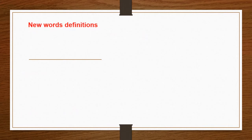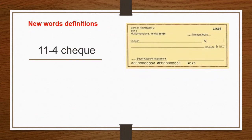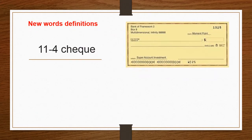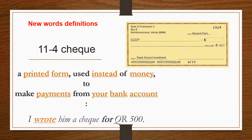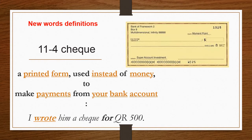Now, new words and definitions. Number eleven: check. Meaning a printed form used instead of money to make payments from your bank account. For example: I wrote him a check for 500 Qatari riyals.